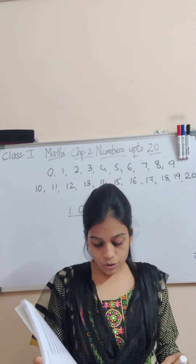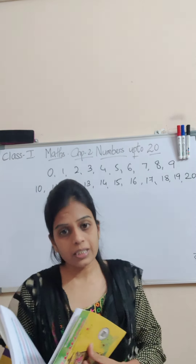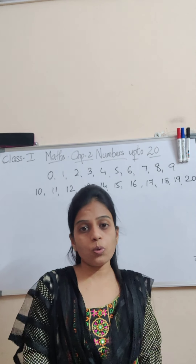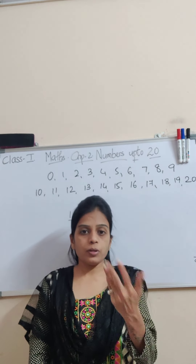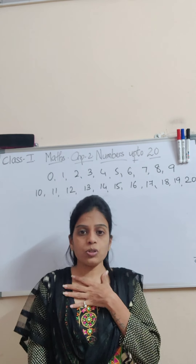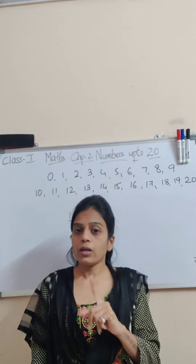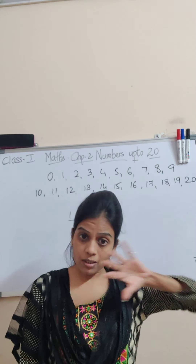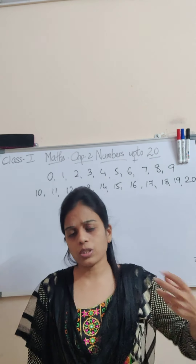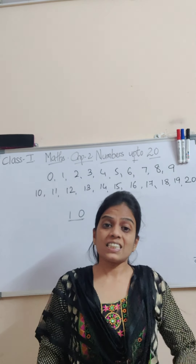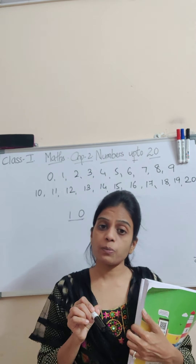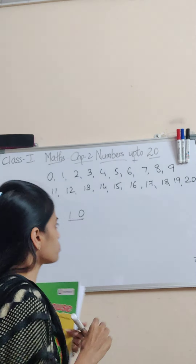Now students, every number has a place — just like every kid has a place. You are students when you are in school or learning something, but when you are not learning, you are a normal kid, a son or daughter of your parents. So same way, numbers also have a place. When you are a student, your place is in school. When you are a kid at home, your place is at home. Same way, numbers also have places.